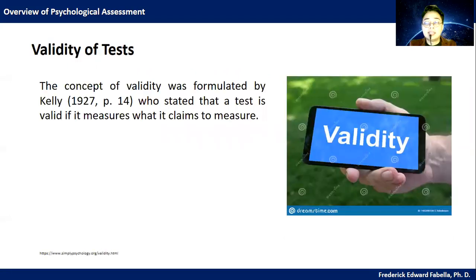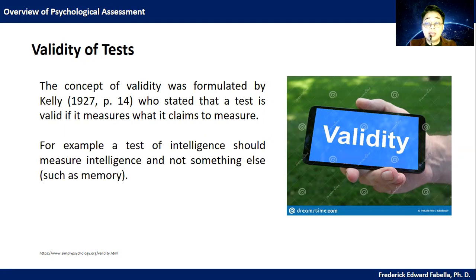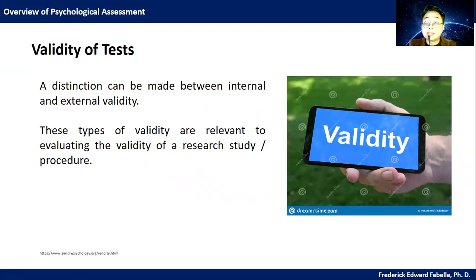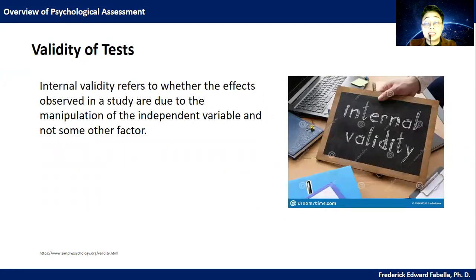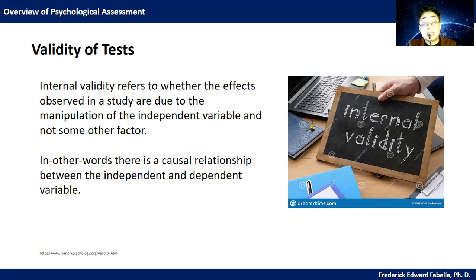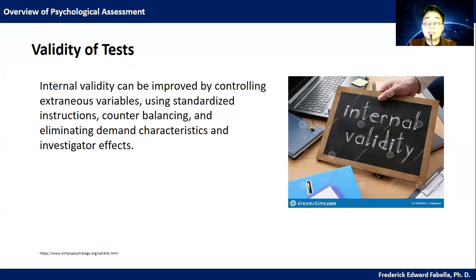Let's talk about validity of tests. The concept of validity was formulated by Kelly, who stated that a test is valid if it measures what it claims to measure. For example, a test of intelligence should measure intelligence and not something else, like memory. A distinction can be made between internal and external validity, which are relevant to evaluating the validity of a research study or procedure. Internal validity refers to whether the effects observed in a study are due to the manipulation of the independent variable and not some other factor — in other words, there is a causal relationship between the independent and dependent variable. Internal validity can be improved by controlling extraneous variables, using standardized instructions, counterbalancing, and eliminating demand characteristics and investigator effects.